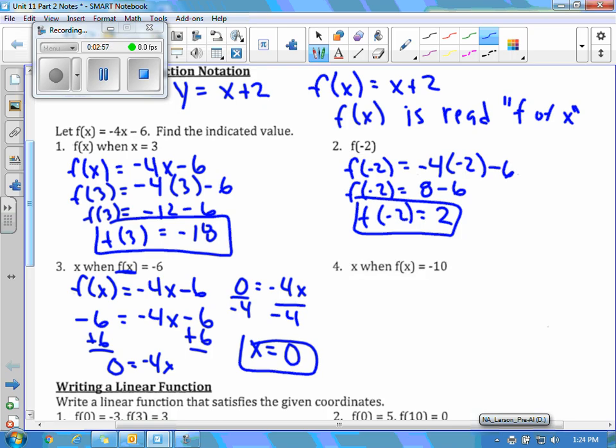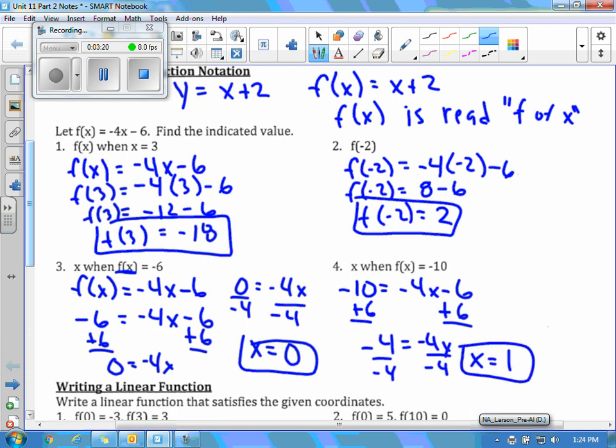Let's look at number 4. It says, find x when f of x equals negative 10. So I'm replacing f of x with negative 10. And then on the right side I've got negative 4x minus 6. Now I want to solve for x. So I've added 6 to both sides. Negative 4 equals negative 4x. Divide both sides by negative 4, and I would get x equals 1. So on 1 and 2, we're solving for f of x. On 3 and 4, we're solving for x.